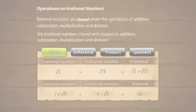As you can see, when two irrational numbers are added, the sum may or may not be an irrational number.